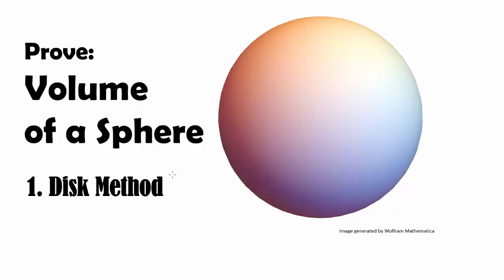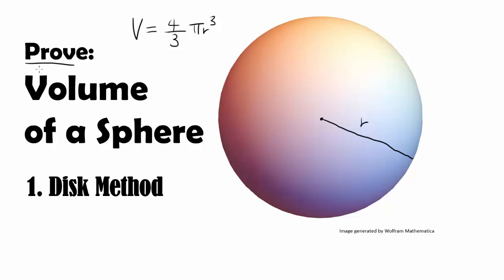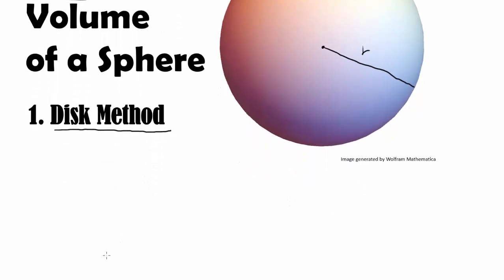We all know from geometry class that the volume of a sphere is 4/3 π r³, where r is the radius of the sphere. You can find the volume by multiplying the cube of r by 4/3 π. But how can you prove this? That's going to be the focus of this video, and we are going to prove it using calculus — specifically, the disk method.